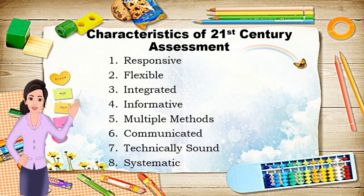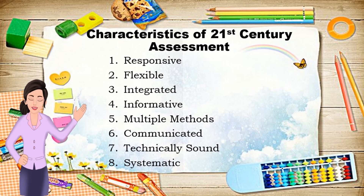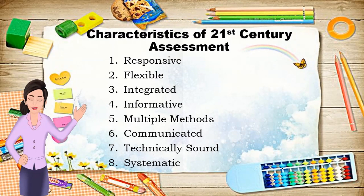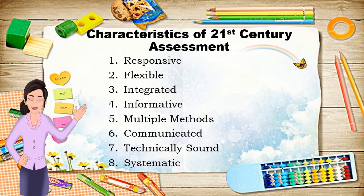Number six is communicated — the assessment data is clear and transparent for all students and school personnel. Number seven is technically sound — for fairness, adjustments and accommodations are made in the assessment process to meet students' needs. Number eight is systematic — in the 21st century, assessment is part of a comprehensive, well-aligned assessment system that is balanced and inclusive of all students, constituents, and stakeholders, and designed to support improvement at all levels.